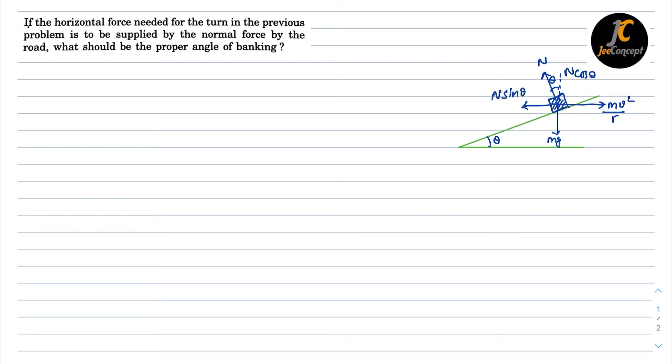If the scooter successfully crosses the circular road, then N sin theta should equal mv² by r, and N cos theta should equal mg. Now dividing these two, we will get tan theta equals v² by rg, as m will cancel out.